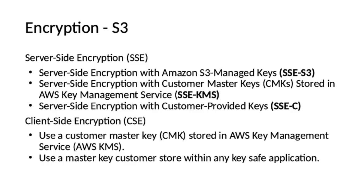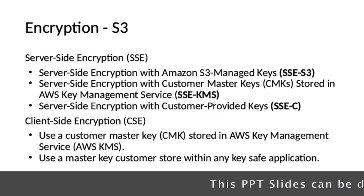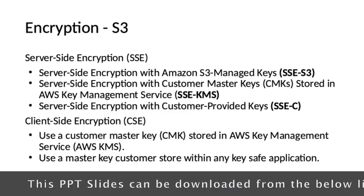There are two types of encryptions in S3: server-side and client-side encryption. Server-side encryption is further divided into three types: SSE-S3 (server-side encryption with Amazon S3 managed keys), SSE-KMS (server-side encryption with customer master keys stored in AWS KMS), and SSE-C (server-side encryption where the customer provides the key). Client-side encryption happens at the client level. If the data in transit needs to be encrypted, client-side encryption is preferred.